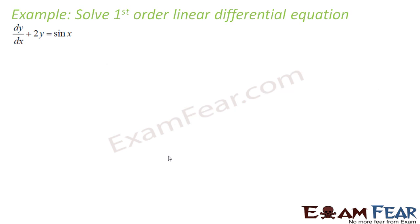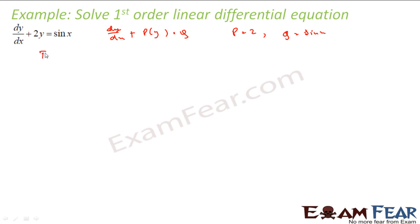dy/dx + 2y = sin x. We'll compare this with dy/dx + py = q. I get p is equal to 2 and q is equal to sin x. It is very easy to find the integrating factor: e to the power of the integration of p dx, that is integration of 2 dx, which gives e to the power 2x. I got the IF.